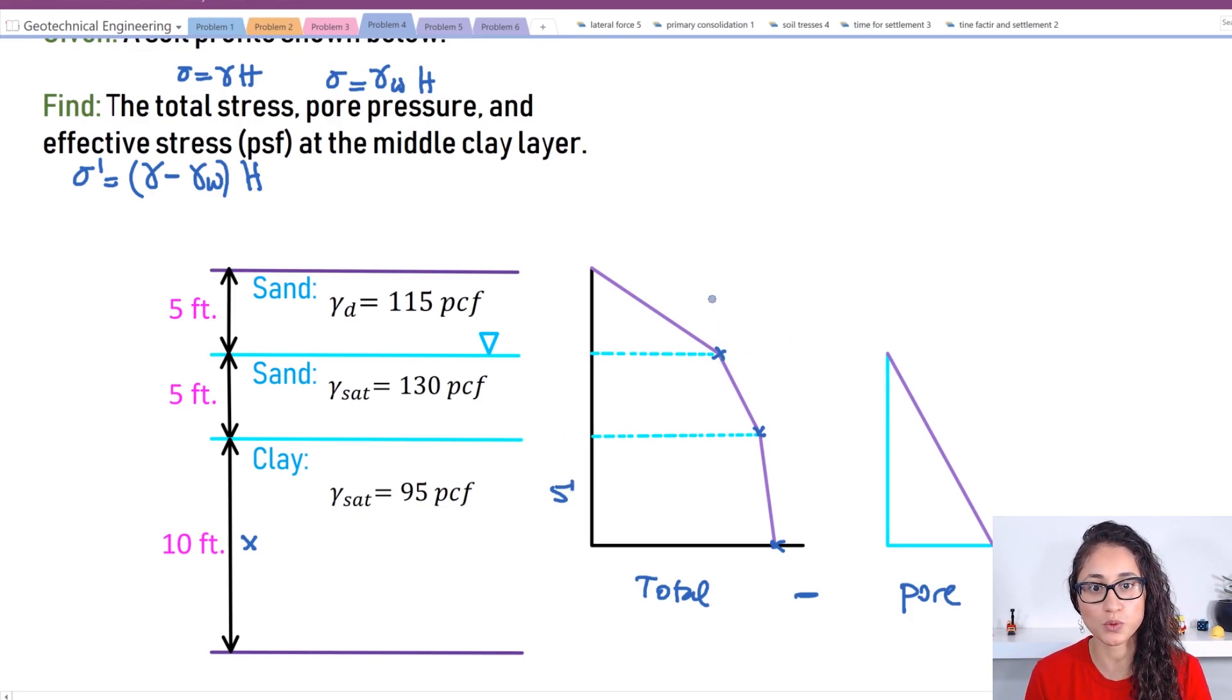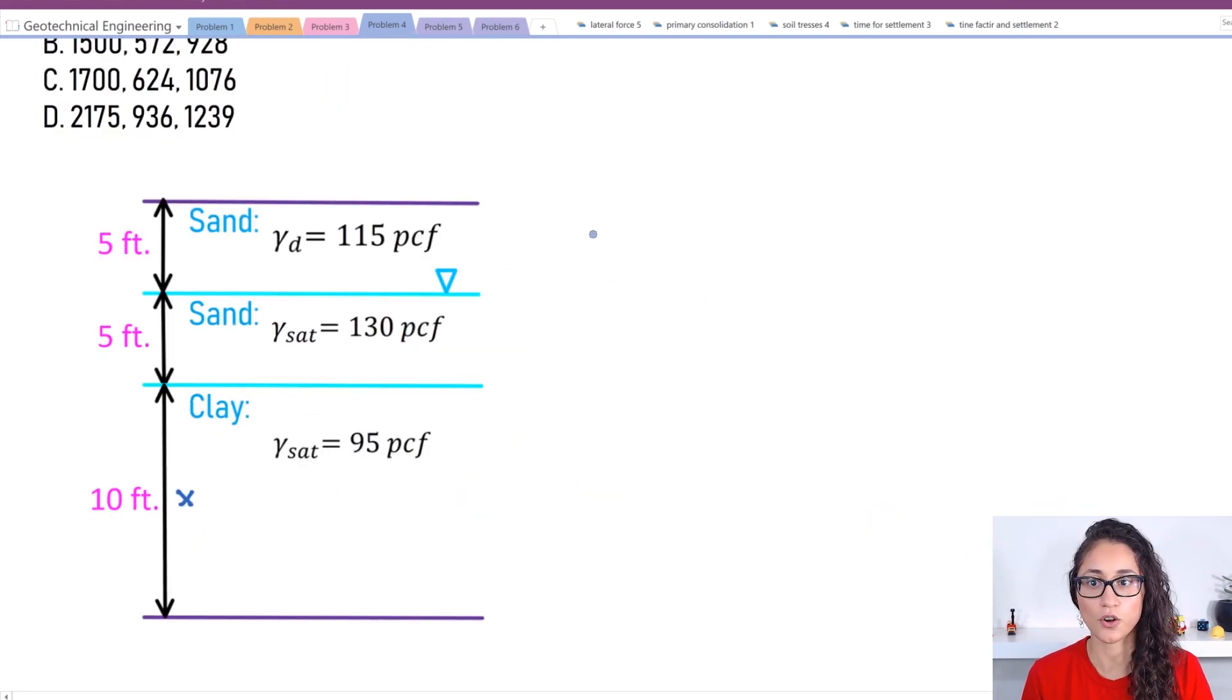Now to calculate this point, we're going to do sigma equals gamma times h. Let's call this sigma one. To calculate sigma two, we have to do sigma one plus gamma h because you have to include the pressure before that point. So make sure you don't forget to add sigma one. And here, let's call this one sigma three. This is going to be sigma two plus gamma h. We also add the sigma two. Now for this one, it's just going to be sigma equals gamma water times h. This is sigma water or like reference handbook denoted as u.